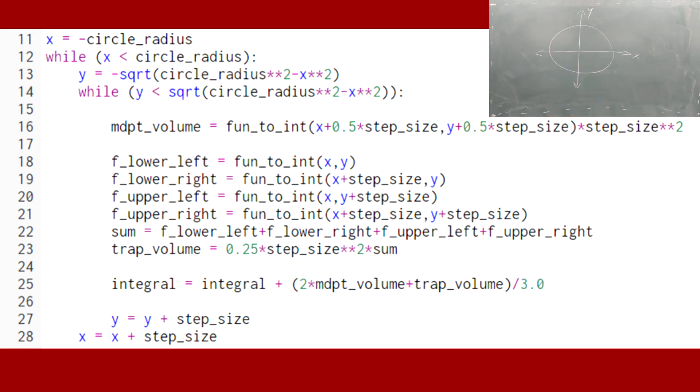Suppose we wanted to integrate our function over a circular region. We can implement this different geometry by making the bounds of the interior loops variable depend on the value of the outer loops variable.